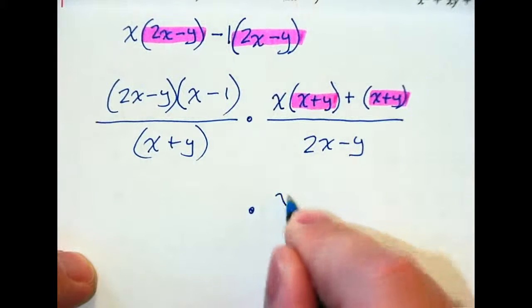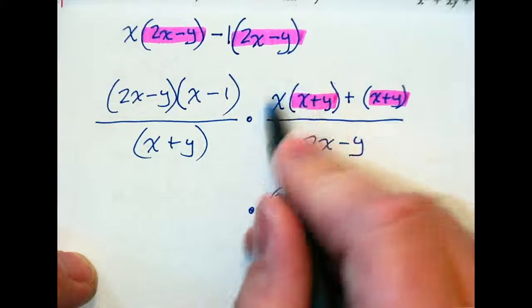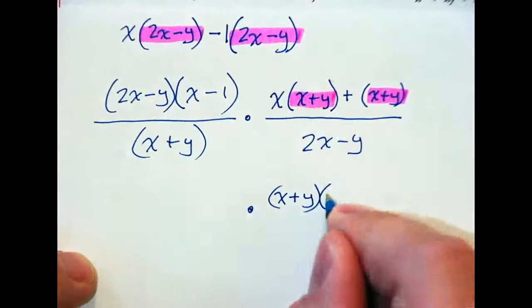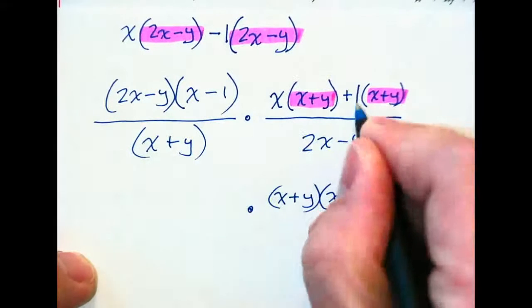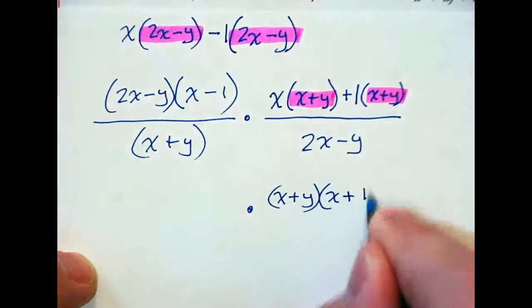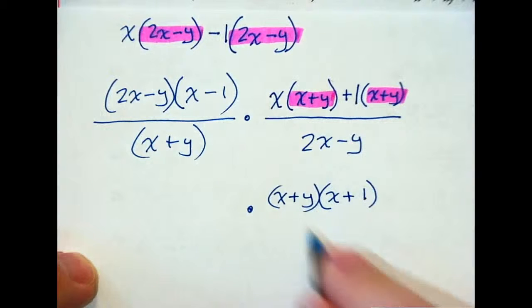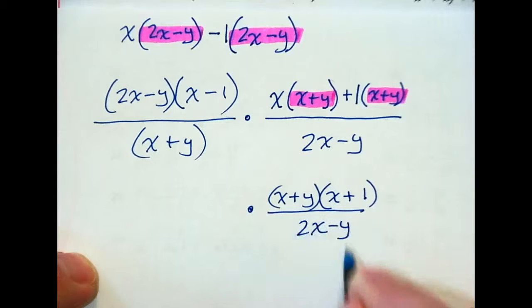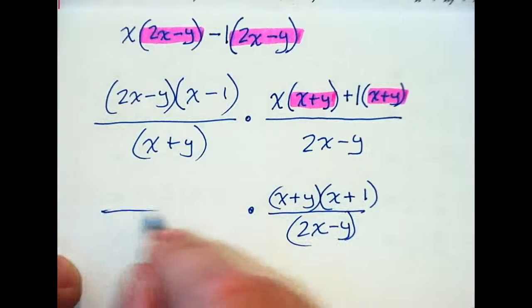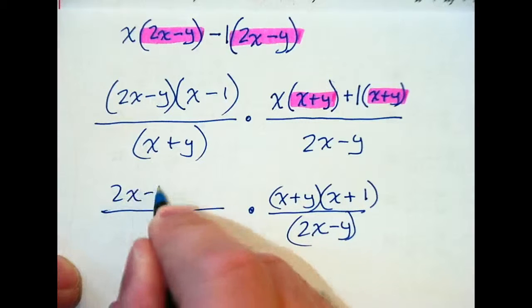So if I take the X plus Y out, what am I left with here? X plus 1. Left with X here, and there's a 1 out there. We don't see it, but it's there. So it's X plus 1. All over 2X minus Y. And then what we did just a minute ago, this side.